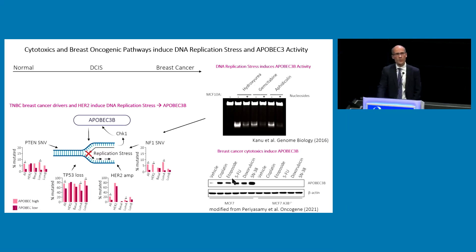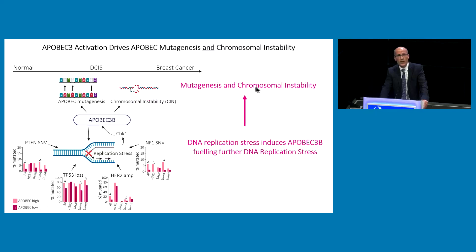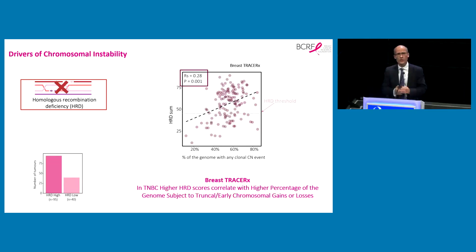When we induce APOBEC3B in cells, we can increase chromosomal instability; when we suppress it, we can suppress chromosomal instability. APOBEC3B is a very potent driver of genome instability — it drives both mutations and chromosomal instability through DNA replication stress. Replication stress results in DNA double-strand breaks and triggers CHK1 kinase activity that induces APOBEC3B. DNA replication stress in breast cancer can occur through loss of tumor suppressor genes like PTEN in triple negative breast cancer, or HER2 amplification in HER2-amplified breast cancer, driving replication stress in a feed-forward loop. We also find that homologous recombination repair deficiency is closely correlated with the degree of chromosomal gains and losses in the trunks of triple negative breast cancer.